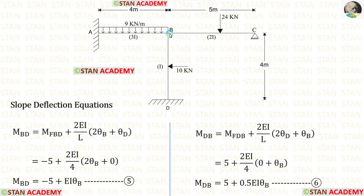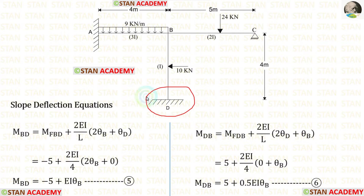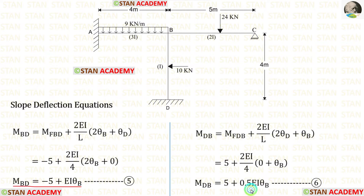Now let us make the slope deflection equations in column BD. We apply the fixed end moments. The length of BD is 4 meters. At point D there is a fixed support, so there will be no slope — theta D equals zero. We make two equations for span BD.